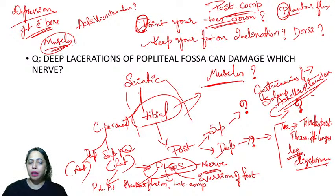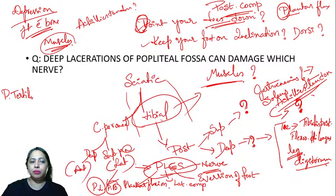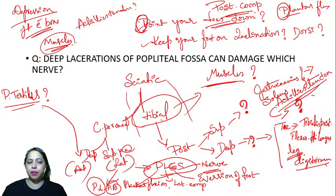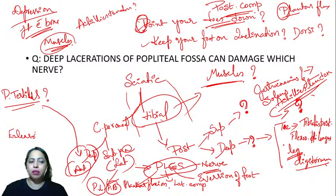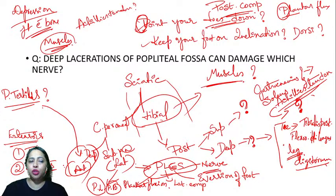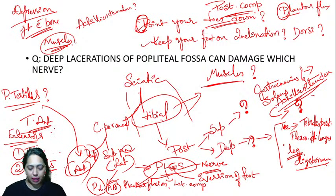Peroneus tertius is not in the lateral compartment — it is in the anterior compartment. The anterior compartment has extensors: extensor digitorum, extensor hallucis longus, peroneus tertius, and tibialis anterior. Don't forget tibialis anterior. All these are supplied by the deep peroneal nerve.